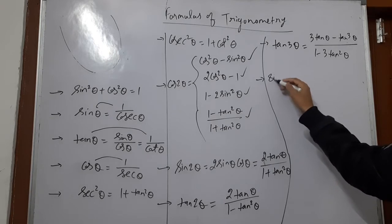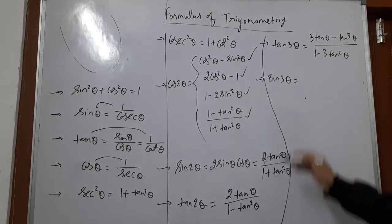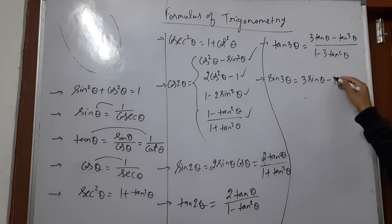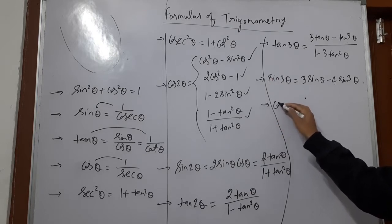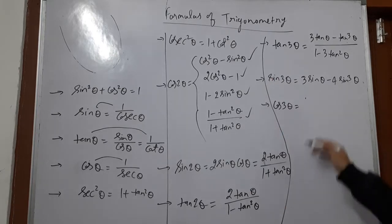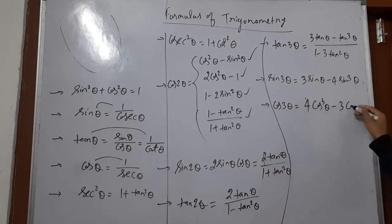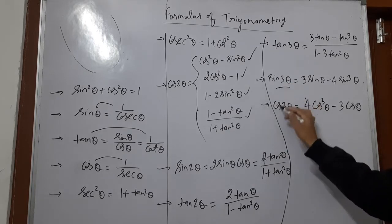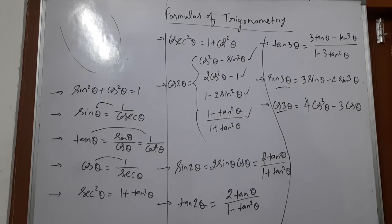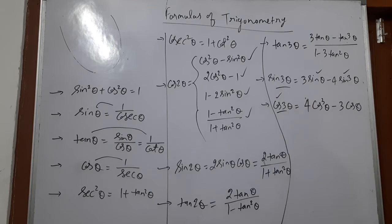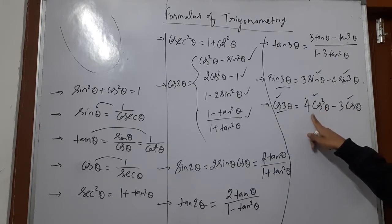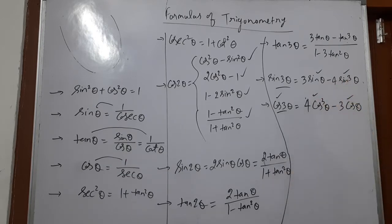Now sin 3 theta is equal to 3 sin theta minus 4 sin to the power 3 theta. And cos 3 theta equals 4 cos to the power 3 theta minus 3 cos theta. As we see here, the formulas of sin 3 theta and cos 3 theta are similar to each other — the only difference is that in sin 3 theta, the power 3 term has a minus sign, whereas in cos 3 theta, the power 3 term comes first.